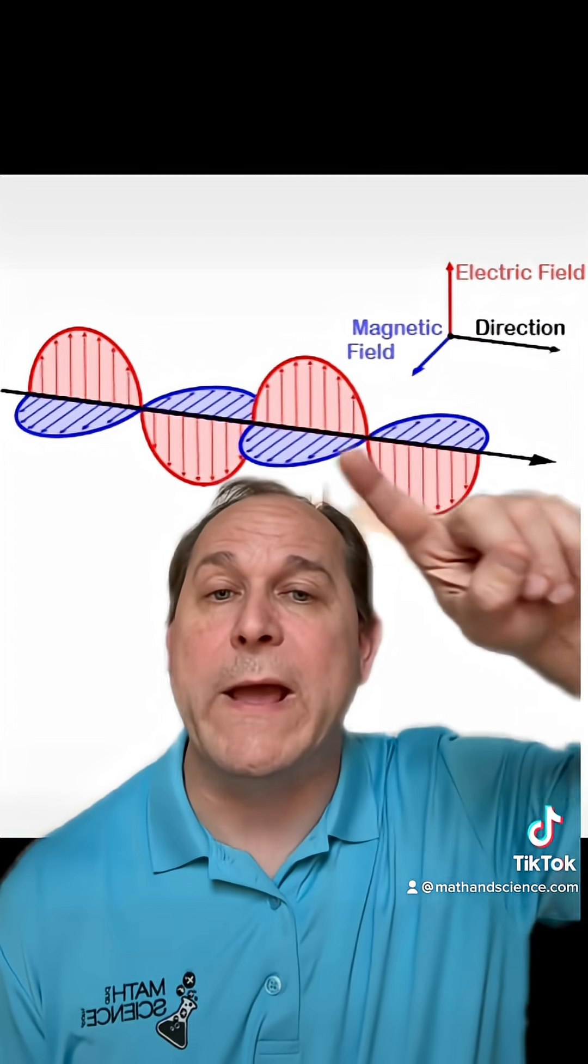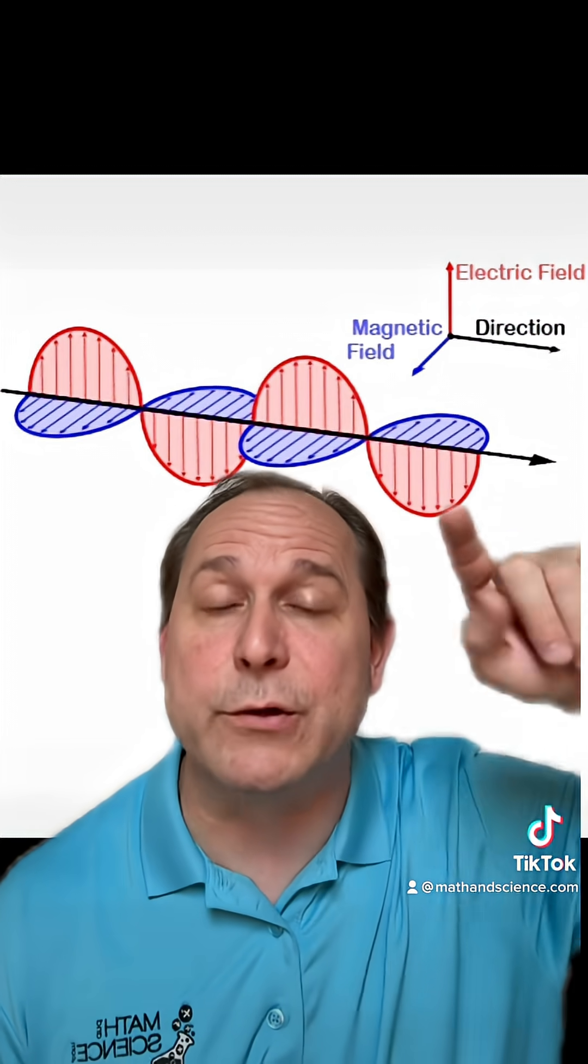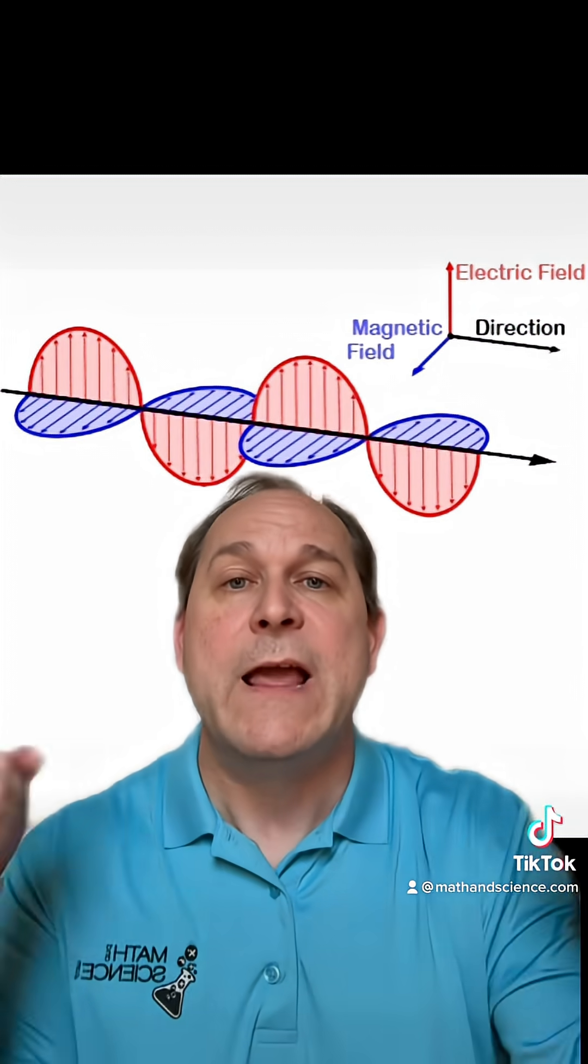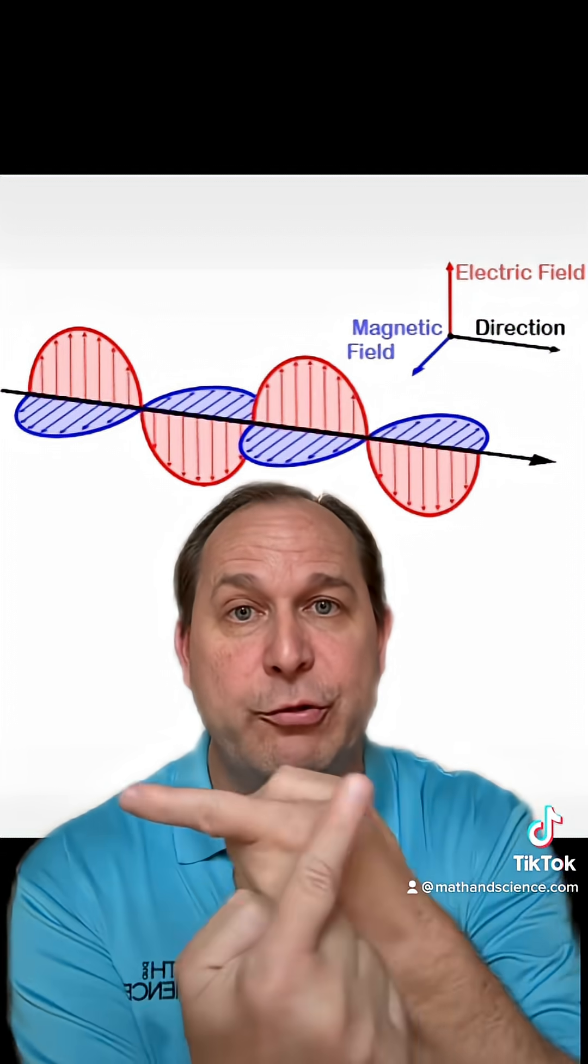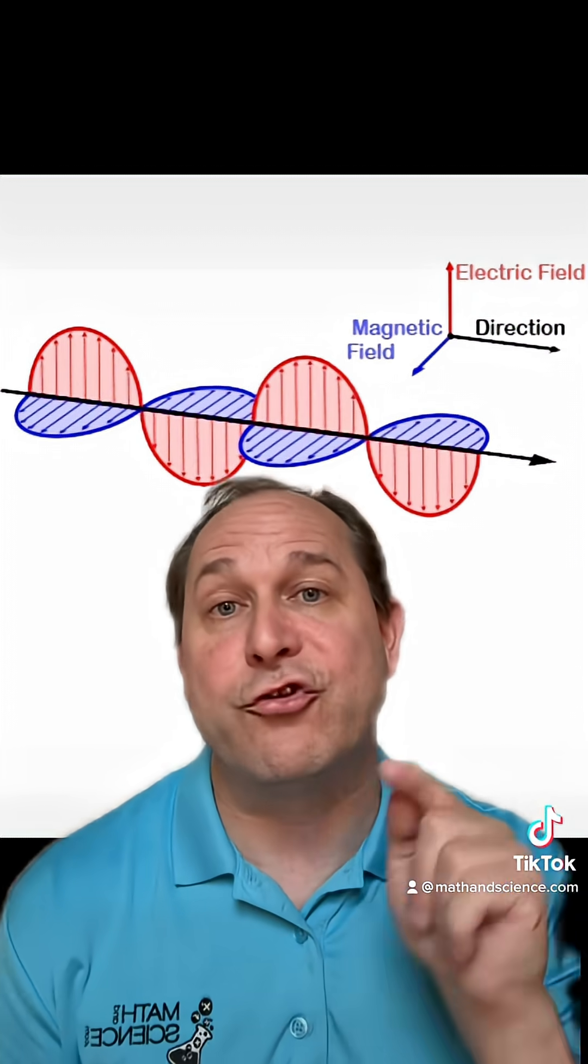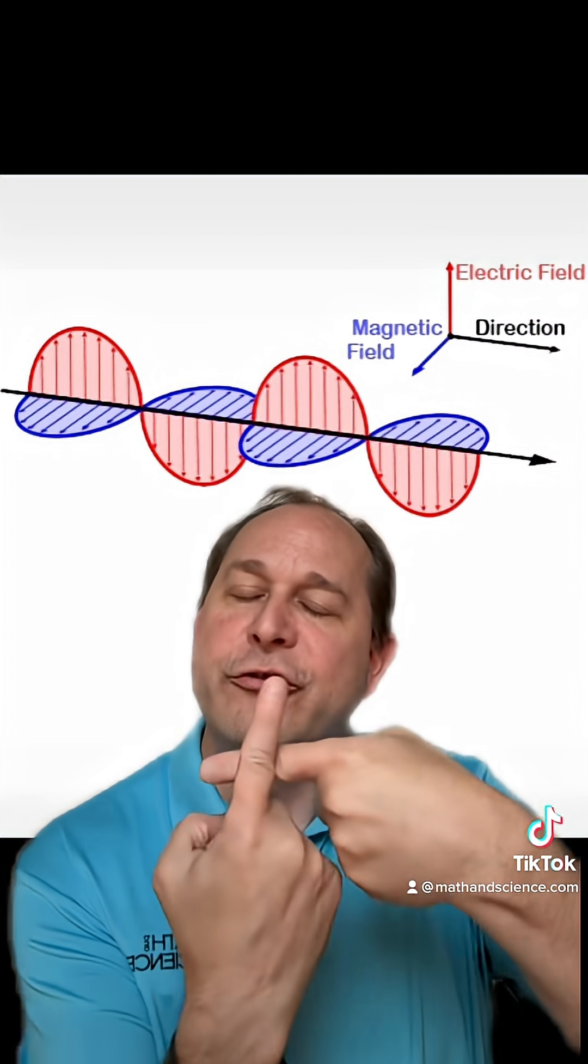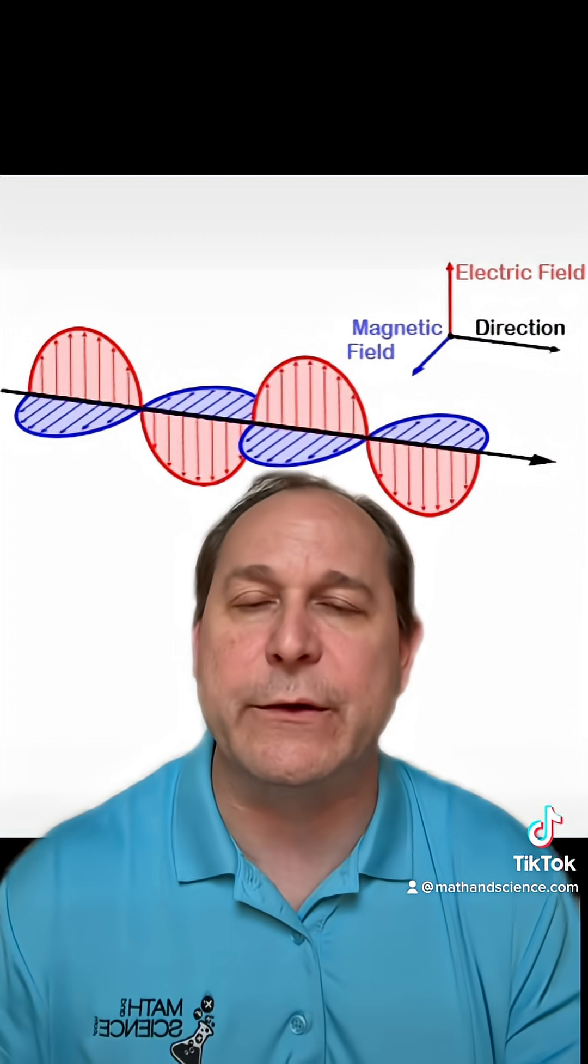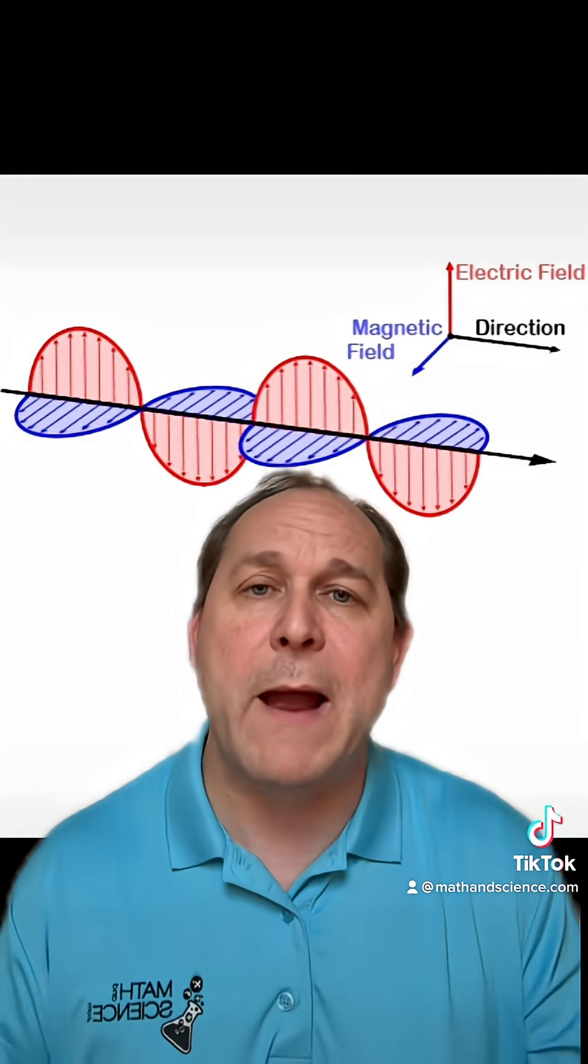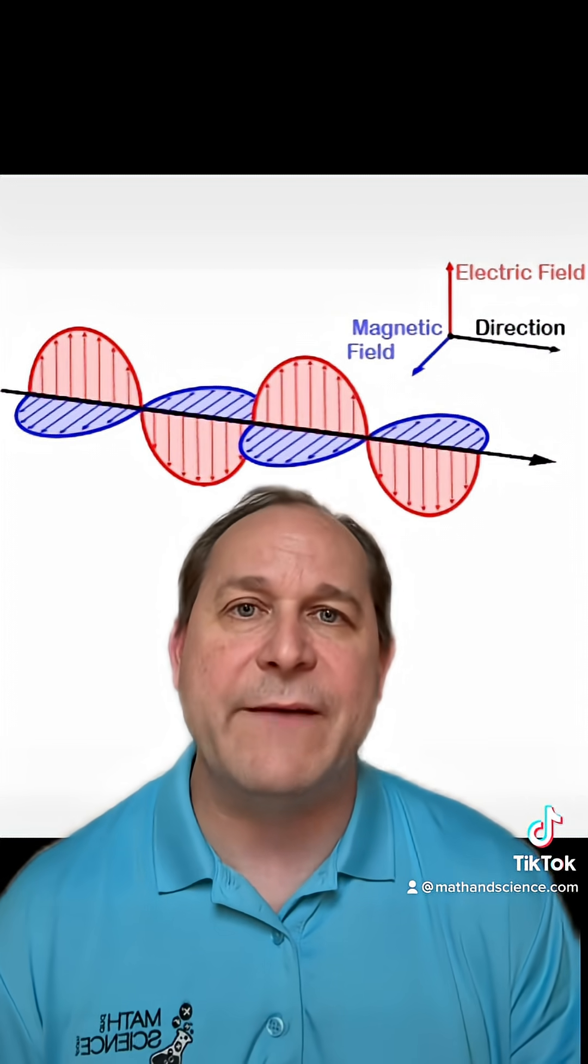Just to remind you, electromagnetic waves have an oscillating magnetic field and an oscillating electric field. They oscillate perpendicular to each other and propagate in a direction perpendicular to the electric and magnetic fields. This oscillation has a frequency associated with it, and for microwaves, that's 2.45 gigahertz.